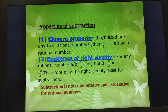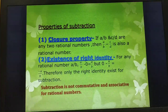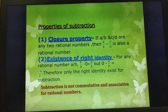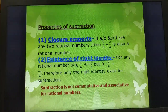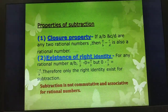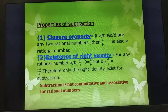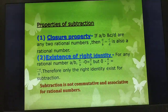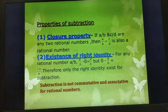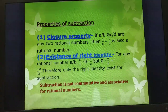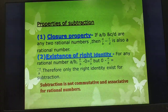Properties of subtraction. First is the closure property: if A/B and C/D are any two rational numbers, then A/B - C/D is also a rational number. For example, 3 - 2 = 1, which is a rational number. Second is the existence of right identity: for any rational number A/B, A/B - 0 = A/B. But 0 - A/B = -A/B. Therefore, only the right identity exists for subtraction.